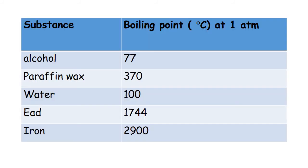You can find the boiling points of some substances: alcohol is 77°C, paraffin wax is 370°C, water is 100°C, lead is 1744°C, and iron is 2900°C.